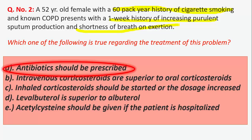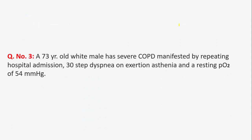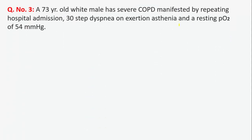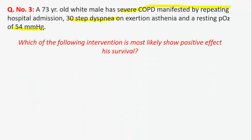So antibiotics should be prescribed. Question 3: a 73-year-old white male has severe COPD manifested by repeated hospital admissions, 30-step dyspnea on exertion, asthenia, and a resting oxygen saturation of 54 mmHg. Which of the following interventions is most likely to show a positive effect on his survival?